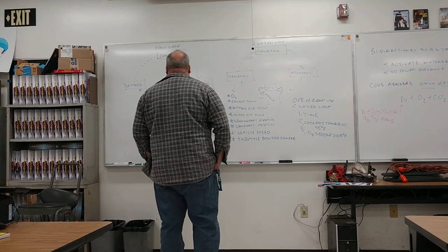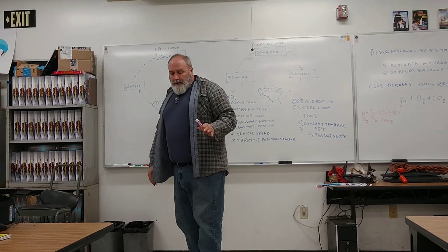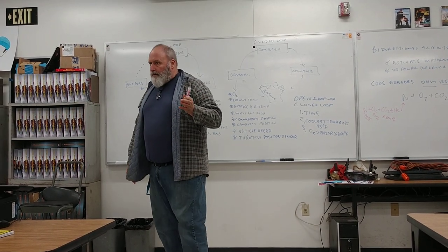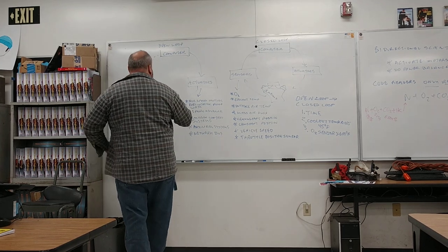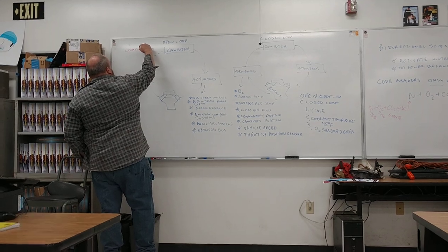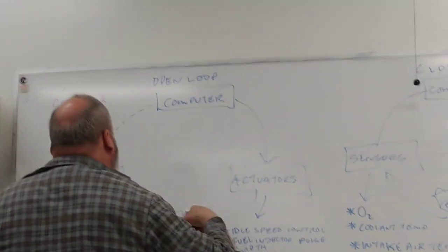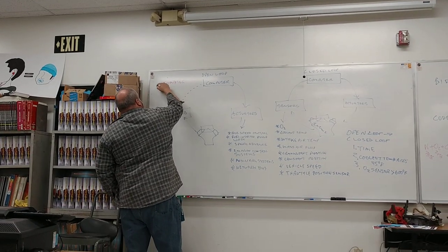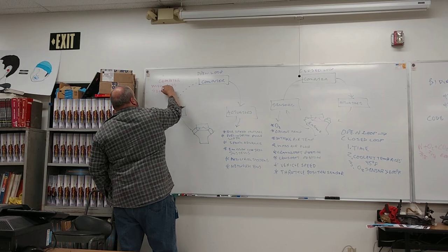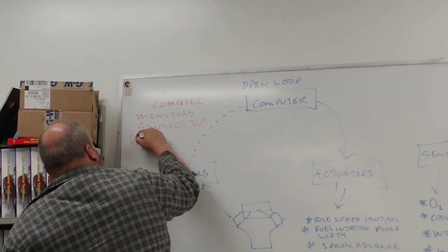Okay, but let's explore what open loop really means. Open loop means that the reason we start in open loop is because we don't trust the sensor output yet, because the stuff's not warmed up. So what open loop means is that we're not going to use sensor output to determine what the computer tells the actuators to do. Computer monitors the sensors, but doesn't use them.